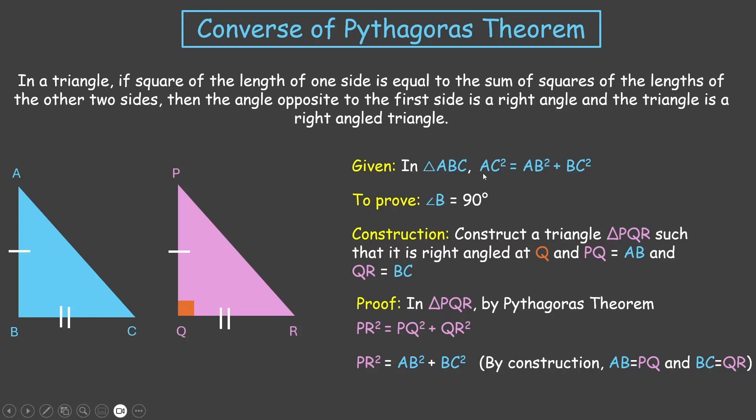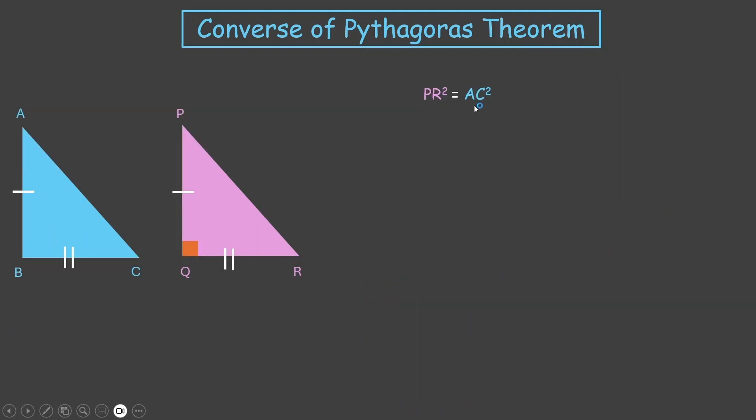Also, it is given that AC² equals AB² plus BC². Now, if you look at these two equations, the right-hand side is equal in both. So that gives us PR² equals AC², which means PR equals AC. So we have established that PR is equal to AC.